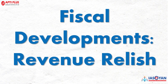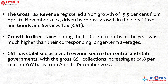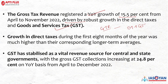Chapter 3: Fiscal Development and Revenue Leverage. The gross tax revenue registered a year-on-year growth of 15.5% from April to November. This was driven by robust growth in two key components: direct taxes and Goods and Services Tax. Growth in direct taxes during the first eight months of the year was much higher than the corresponding long-term average.